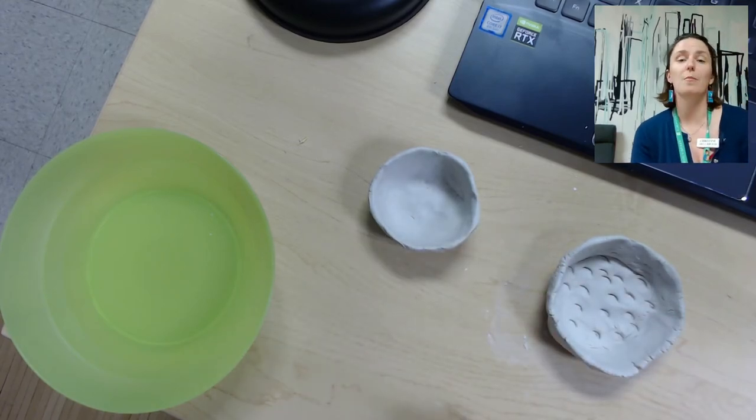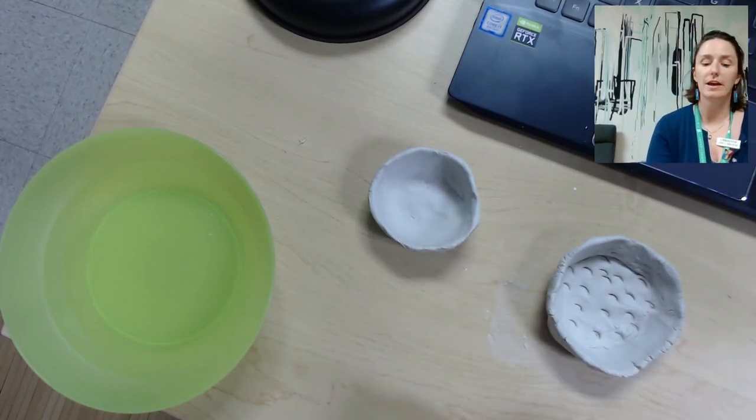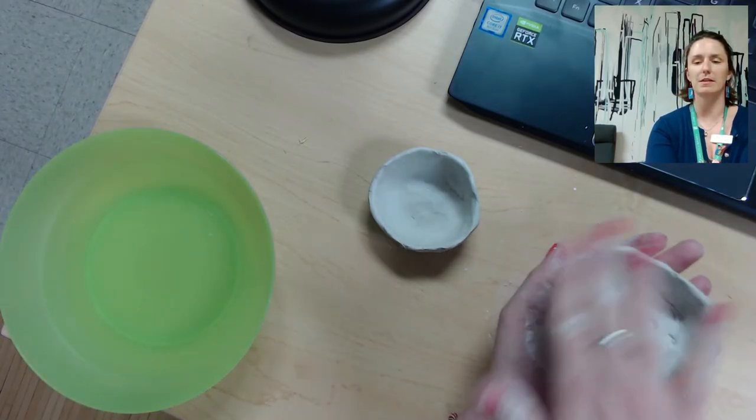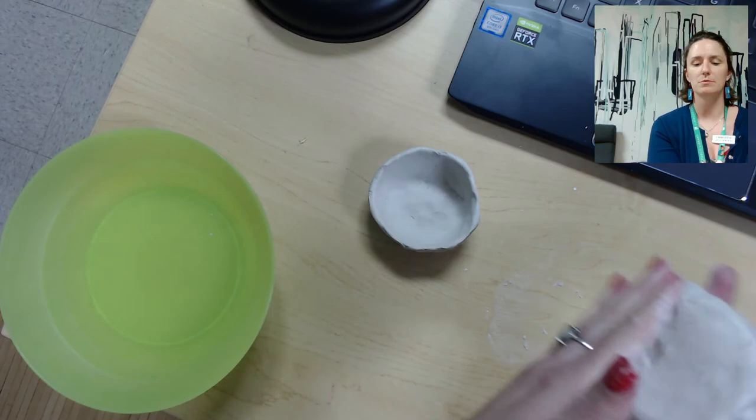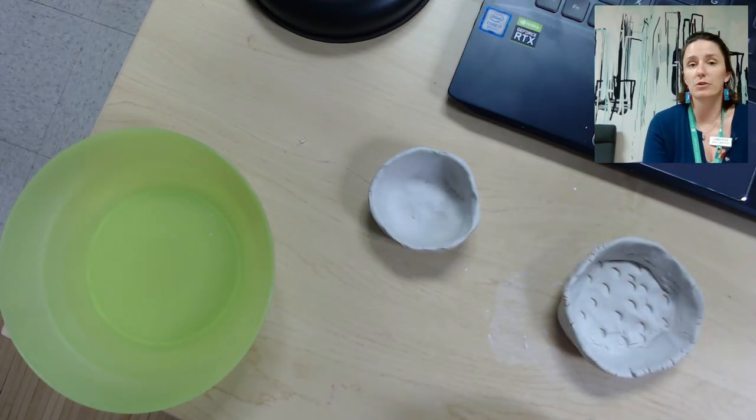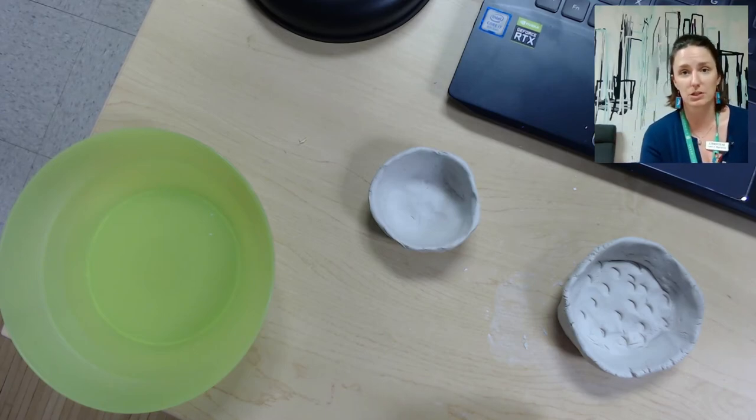Then you're going to take your Mod Podge and you're going to layer, you're going to paint it over the surface. So you're going to paint the whole thing, the bottom too, and let that dry. And then your bowl or your pinch pot will be ready to use for whatever you like.